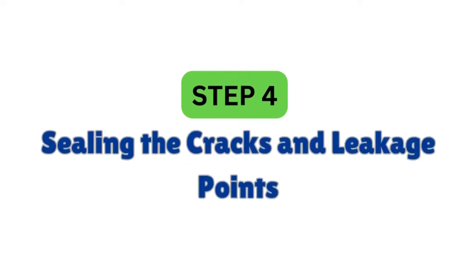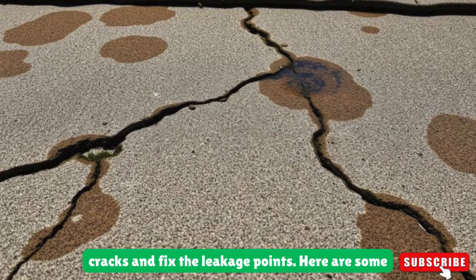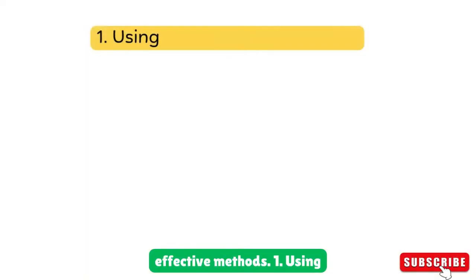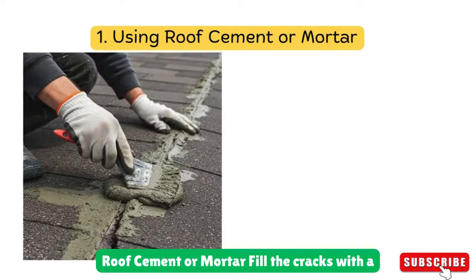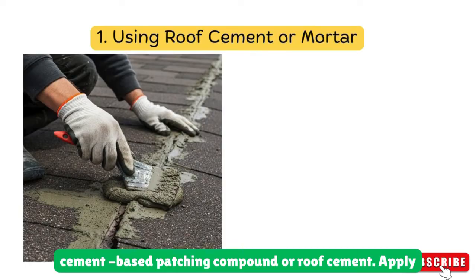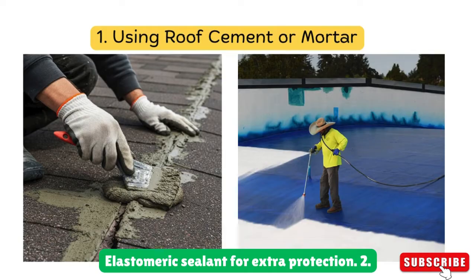Step 4: Sealing the cracks and leakage points. Once the roof is clean, it's time to seal the cracks and fix the leakage points. Here are some effective methods. Method 1 — Using roof cement or mortar: fill the cracks with a cement-based patching compound or roof cement. Apply a roof primer and let it dry, then use an elastomeric sealant for extra protection.